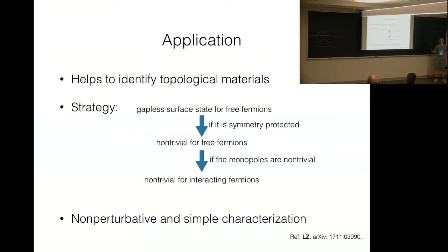Then, to check what is non-trivial for interactions, one way to do is to check the properties of the monopoles of this insulator using the ideas developed here. If the monopoles have some non-trivial projected quantum numbers, you know such a state is also non-trivial for interacting fermions. Let me emphasize, this is a non-perturbative characterization of the topological state, and it's usually very simple. In some sense, it's even simpler than calculating topological invariants.